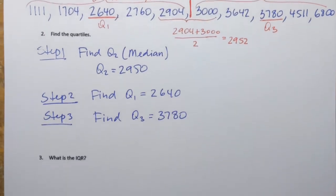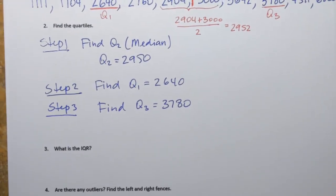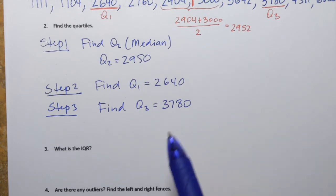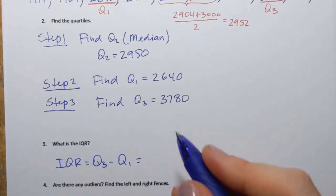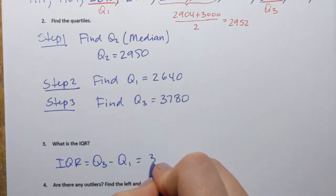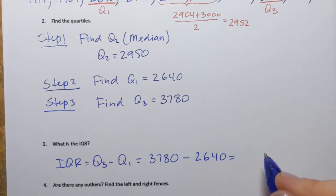Remember, IQR, that's something that helps us to identify outliers. So we need to check if this data set has any outliers. So IQR, the interquartile range, is the difference between Q3 and Q1. We have those from the previous step. So we'll have to take 3,780 and subtract 2,640. And that is 1,140.